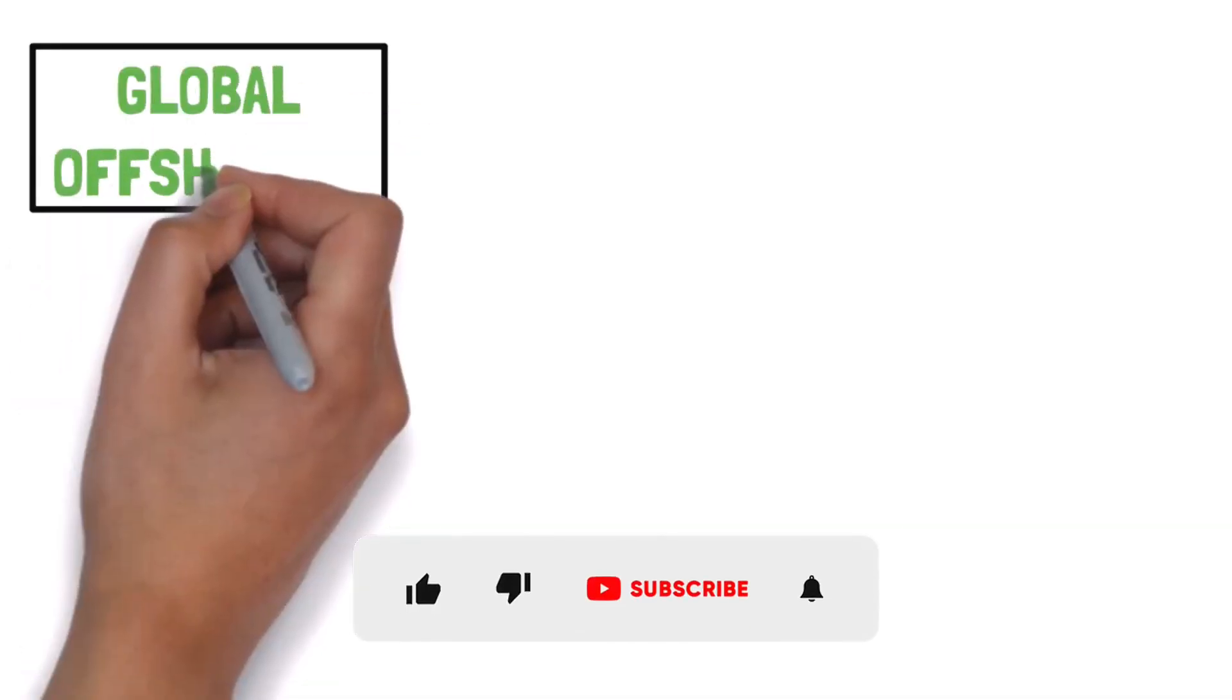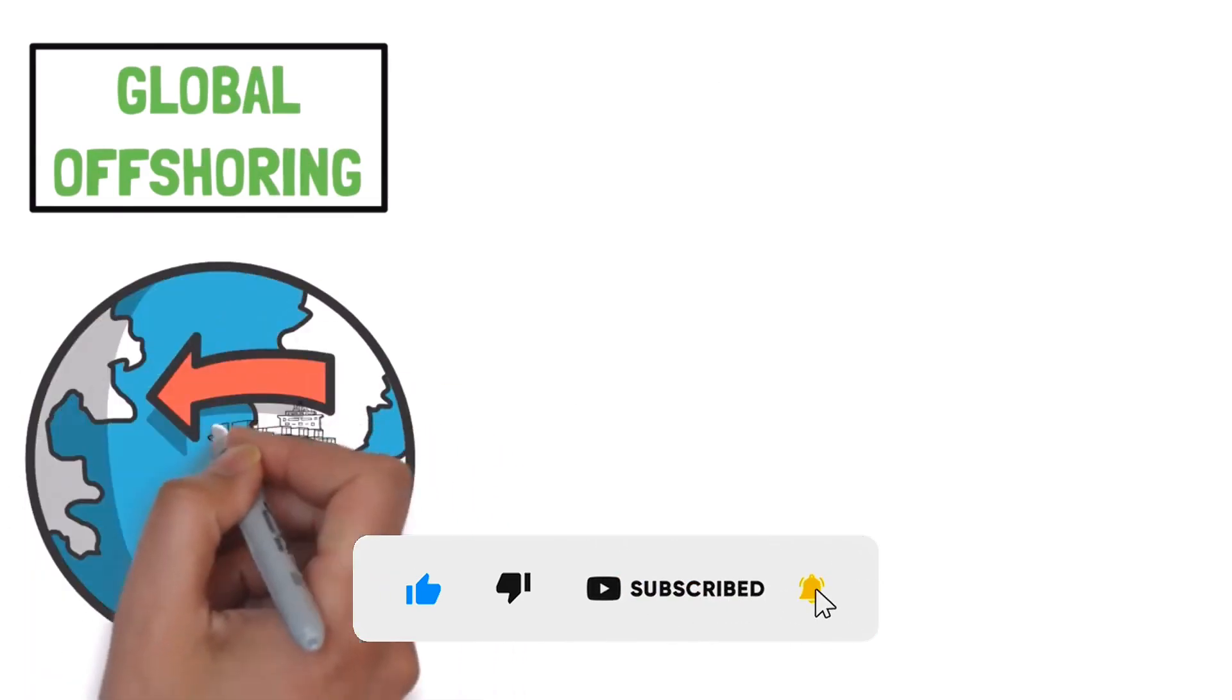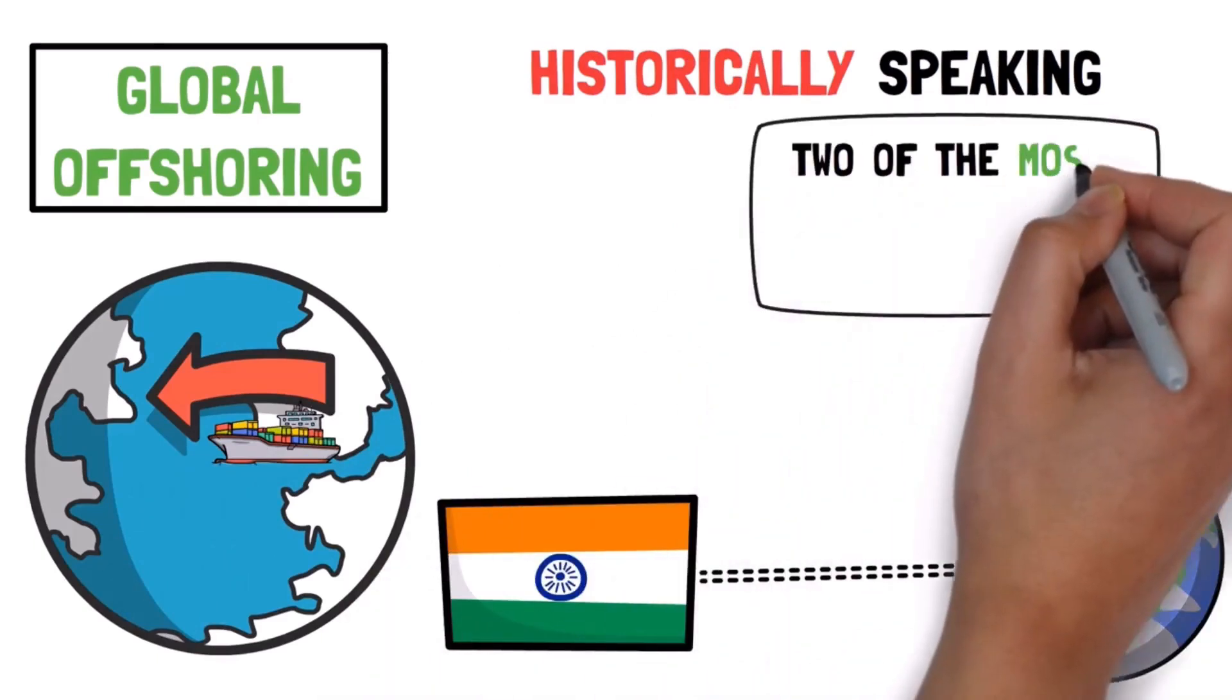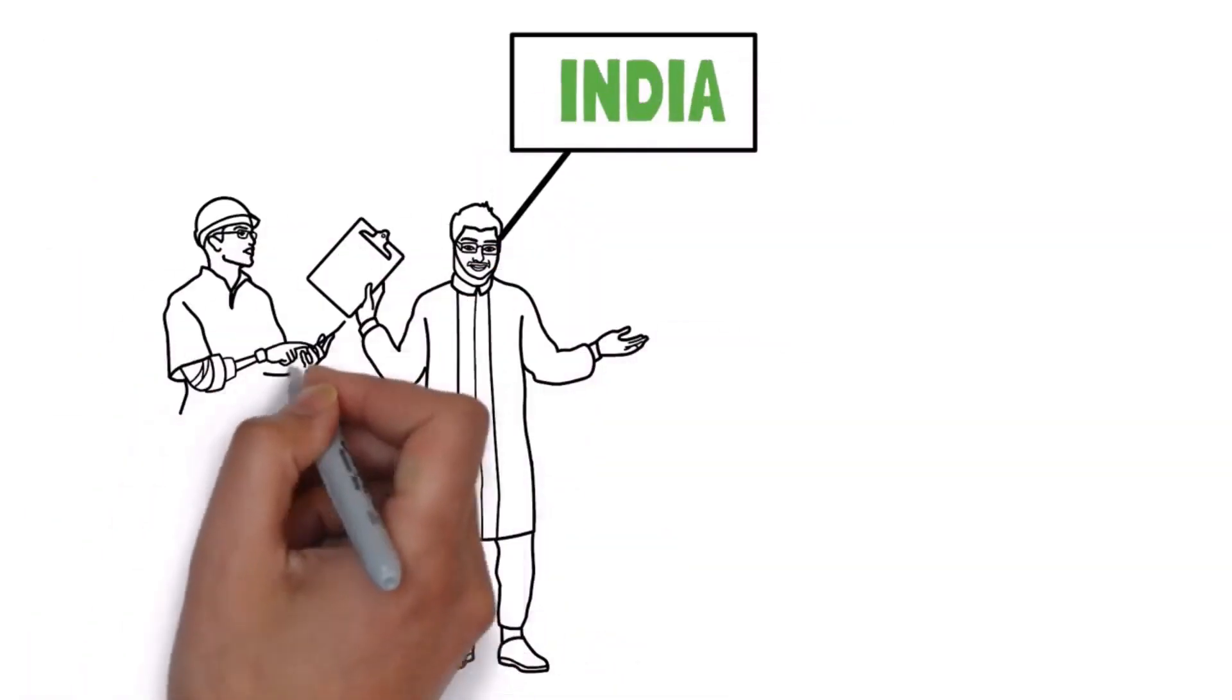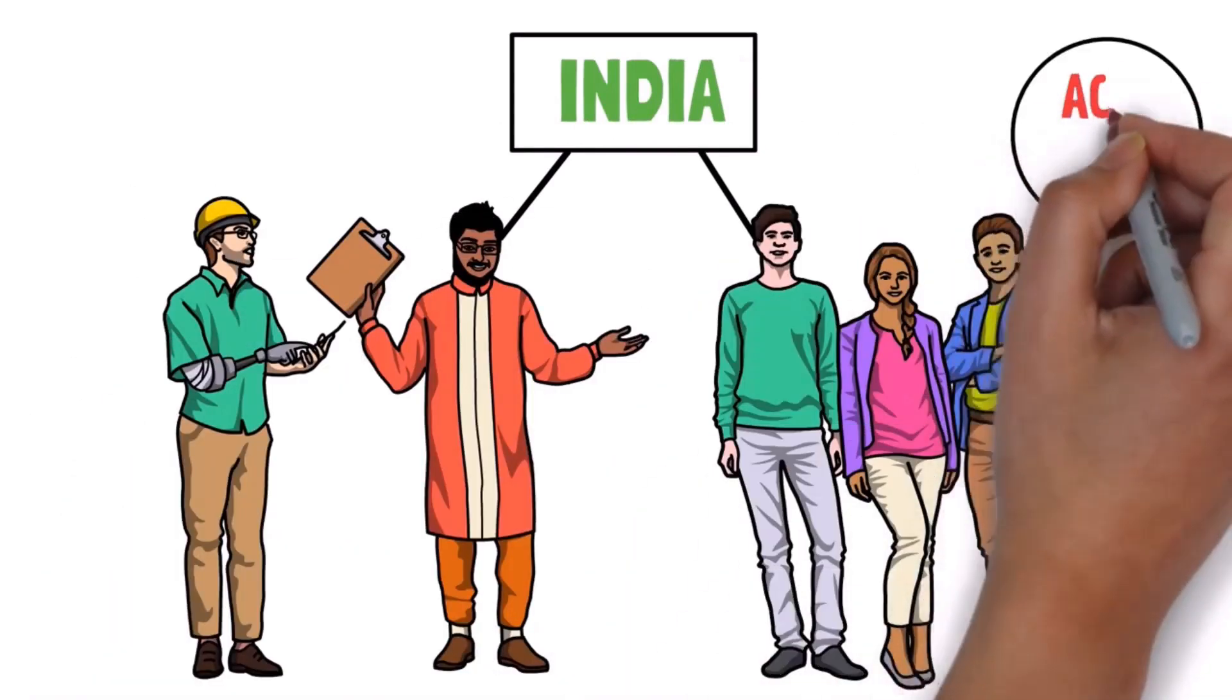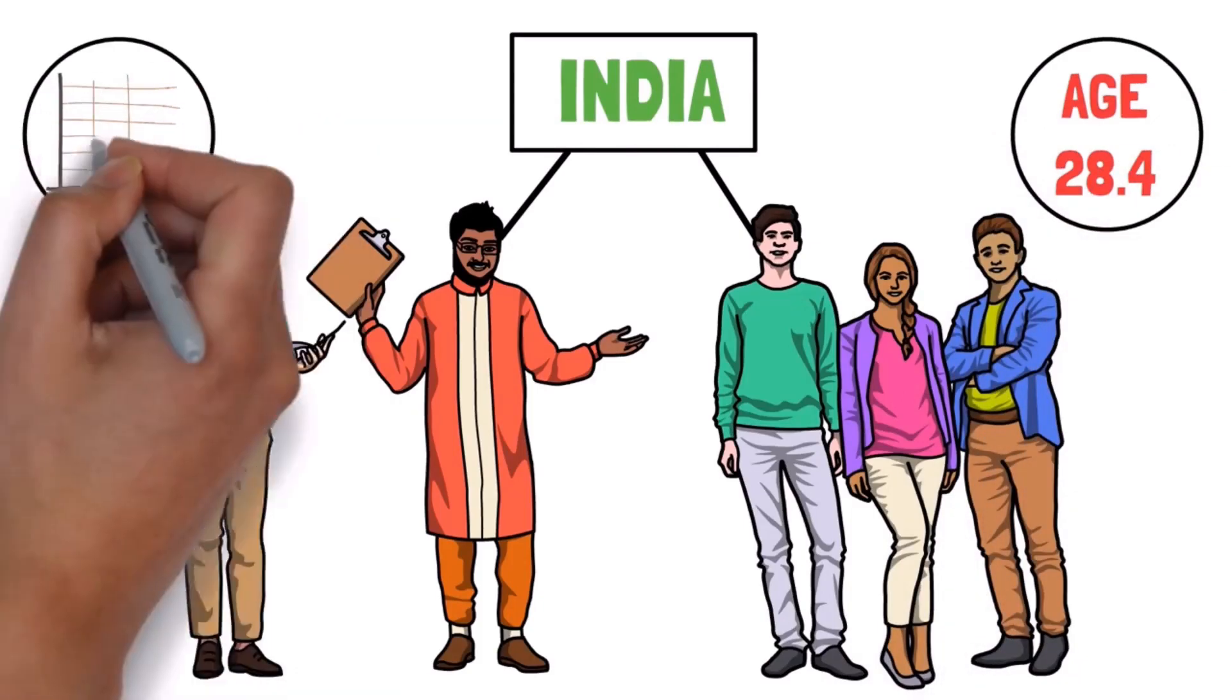Global offshoring refers to when a country outsources its production to another country. Now, historically speaking, the world just said to India, here, have two of the most important things anyone can do, software development and customer service. But here's the thing, India has the biggest pool of talented engineers in the world, and India has one of the youngest populations in the world. The median age is 28.4 years old, which also really helps them boost their overall economic output.